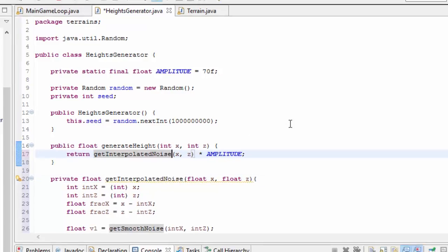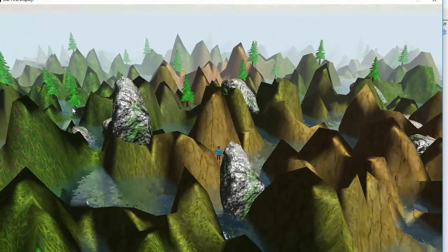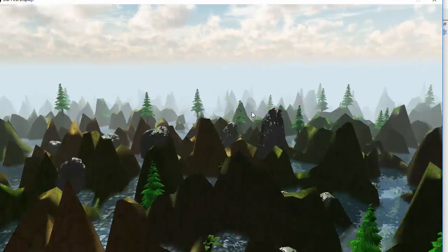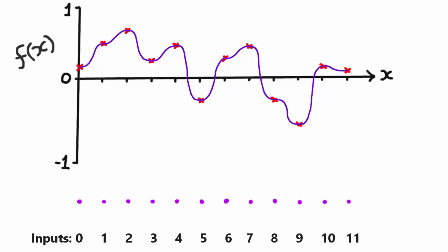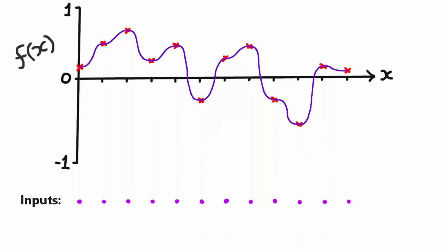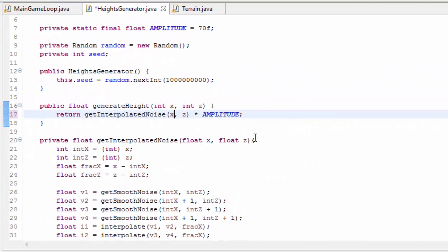Using getInterpolatedNoise instead of getSmoothNoise and running it, it looks pretty much exactly the same as before. The reason there's no visible change yet is that we're still putting in integer inputs, so we're still getting the values of the points themselves, and all the interpolation between points is irrelevant. But if we divide all our inputs by 4, for example, we'd start to see those interpolating curves in the output.